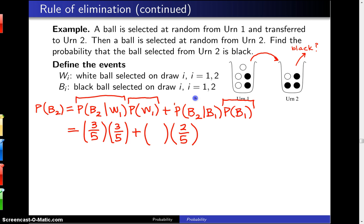And finally, the last one to calculate is the probability we have a black ball on the second, given we have a black ball on the first. In this case, a black ball gets transferred over. Four out of the five of them are black. So 4 fifths is this probability.